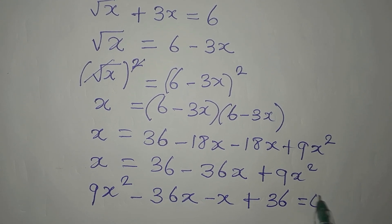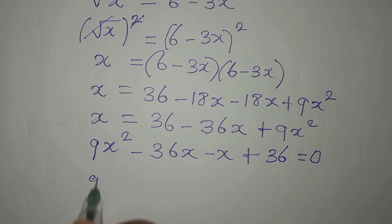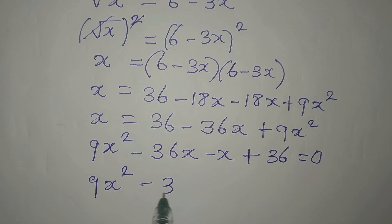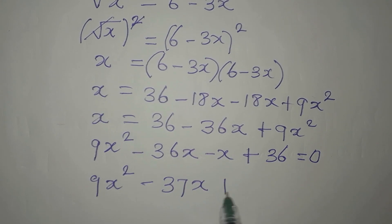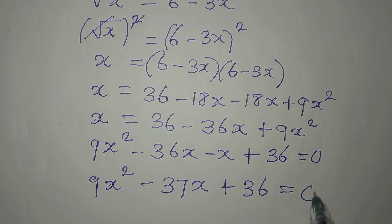Then what is left? I have 36 and it's plus 36 there. Now, everything equals 0. Nothing on the other side. 9x squared now minus 37x plus 36 is equal to 0.